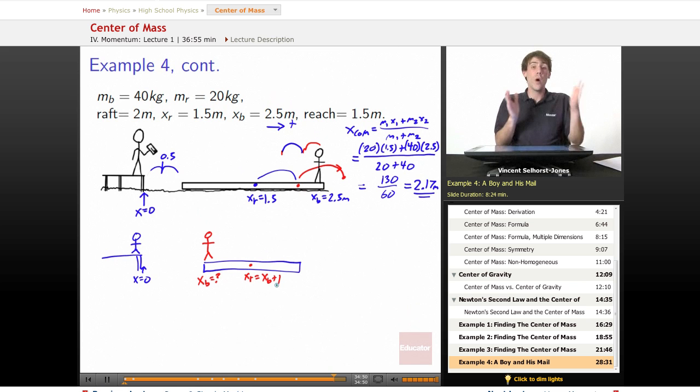So we can think that xr equals xb plus 1, because he's going to be 1 meter from the end, because he's going to walk as far as he possibly can. So we've got that xr equals xb plus 1. xb is unknown, but we know that x center of mass is going to remain 2.17 meters from what we solved before.